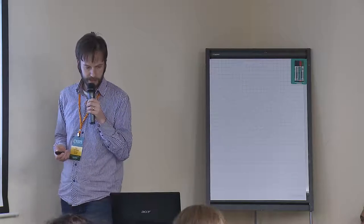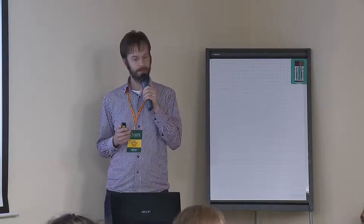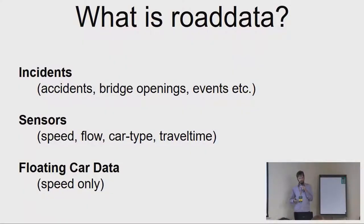They use it for traffic management information, some analysis. Especially that analysis part we are involved in, and we got the opportunity to do some experiments with that data. What is road data, or floating car data? Basically, you can put that into three categories. You have the incidents, which are locations along or on the road where something happens. Could be an accident, could be a bridge that opens, could be events which are already planned ahead.